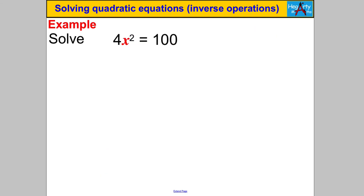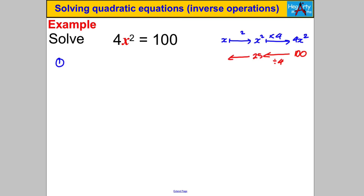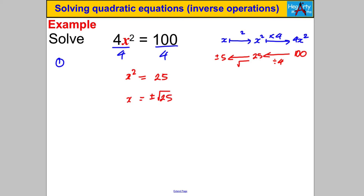Let's try 4x² = 100. Pause and have a go. Think what happened to X: you squared it, then multiplied by 4. To undo this: first divide both sides by 4 to get X² = 25, then take square roots to get X = ±5.